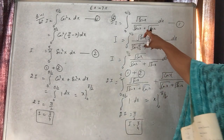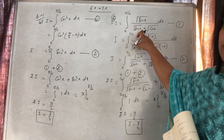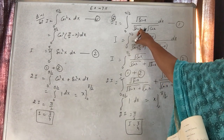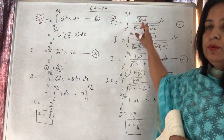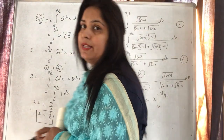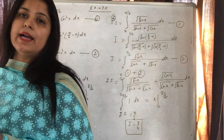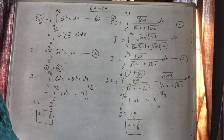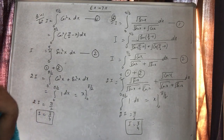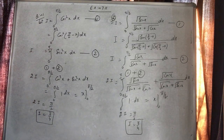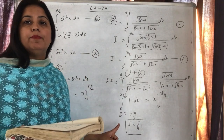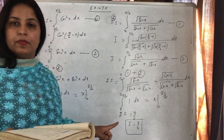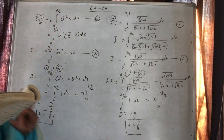Is question ko hum bina property ke solve nahi kar sakte the. Kyun? Kyunki aapke paas under root hai. Agar hum isse rationalize kar dein toh bhi root sin x hoga, phir substitution laghega ya nahi laghega — third fourth question mein power bhi 3/2 aur raised to power 5 hai. Toh jahaan property se question bilkul easy ho sakta hai, wahaan hum property apply karte hain.